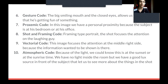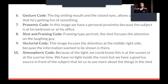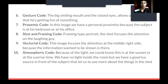The sixth code: the big smiling mouth and closed eyes allow us to know that he's having fun with something. The seventh is the proximity code — in this image we have a personal proximity because the subject is at his bedroom or office. The eighth is the shooting framing code — the framing type is portrait and the shot focuses attention on the subject.